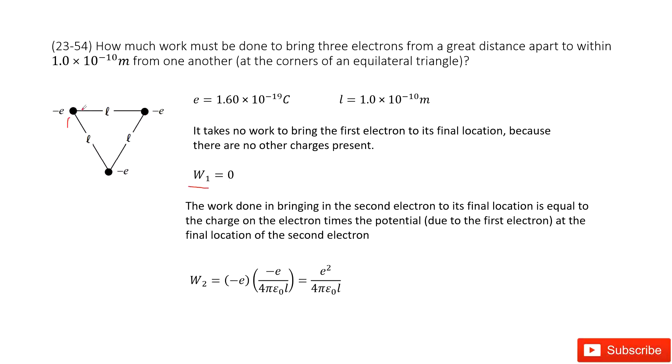Now charge one is there. We need to bring charge two there. If we bring charge two there, we must consider the electric potential due to charge one. So the electric potential due to charge one is negative e divided by 4πε₀L. The distance is L, and then times charge two, negative e. So this is the work needed for putting charge two there.